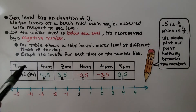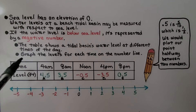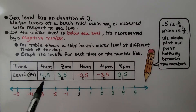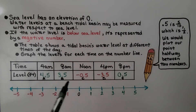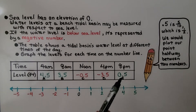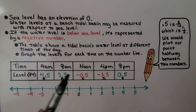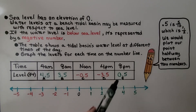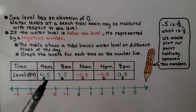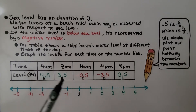We need to graph the levels for each time on the number line. Notice that this is labeled A, B, C, D, and E. So once we plot these points, we need to label those points with those letters.